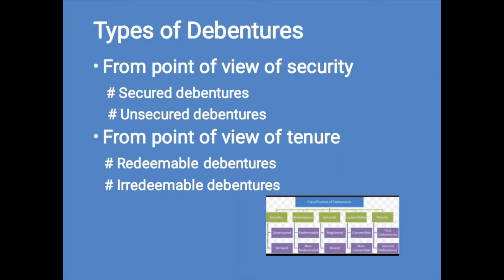The second classification is from the point of view of tenure: redeemable and irredeemable debentures. Redeemable debentures are those that are due on the cessation of the timeframe, either in lump sum or in installments during the lifetime of the enterprise. Debentures can be reclaimed either at premium or at par. Irredeemable debentures are also called perpetual debentures, as the company does not make any attempt for the repayment of money acquired through such debentures. These debentures are repayable on the closing up of an enterprise or on the expiry of a long period.